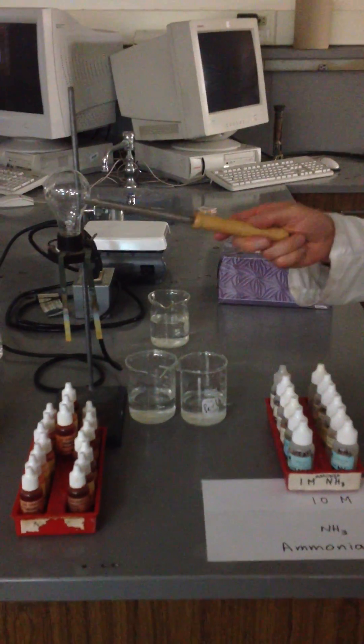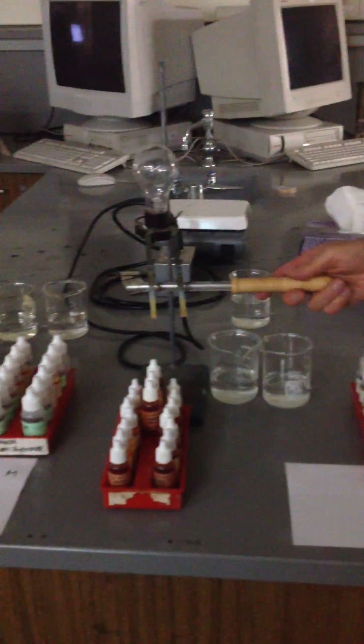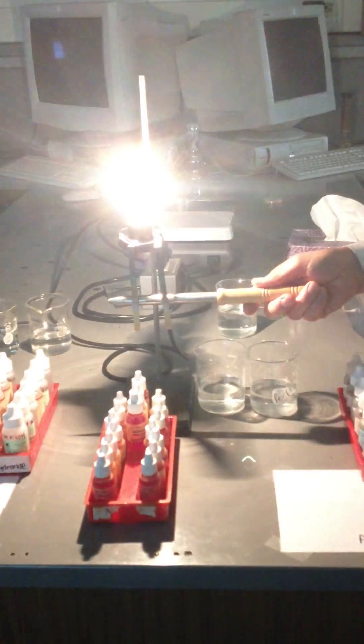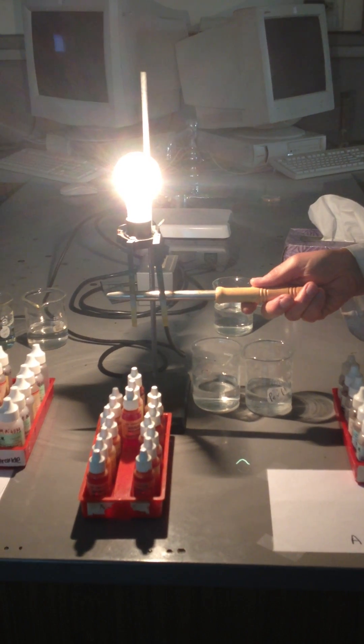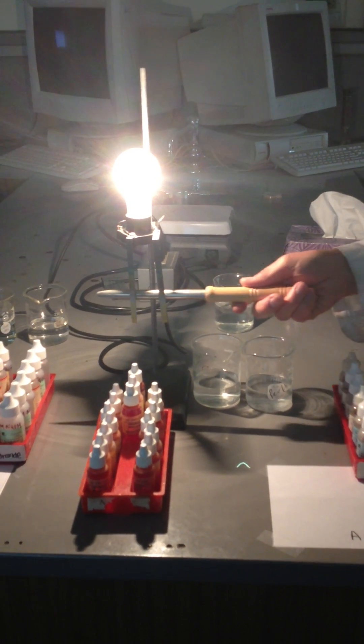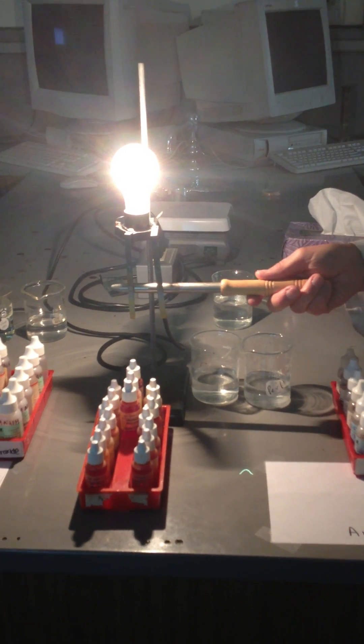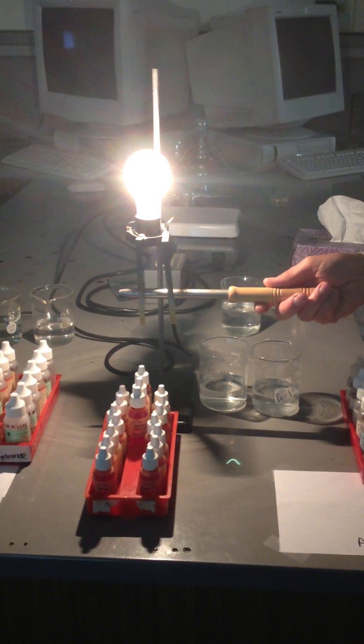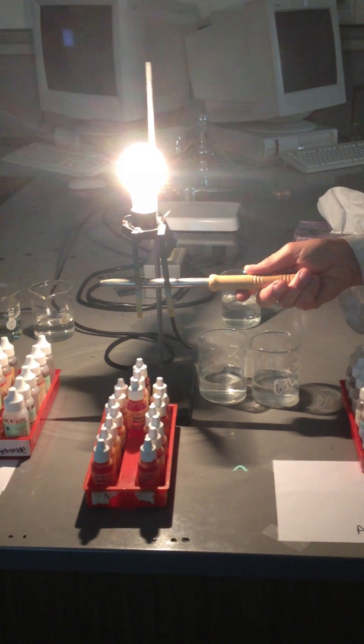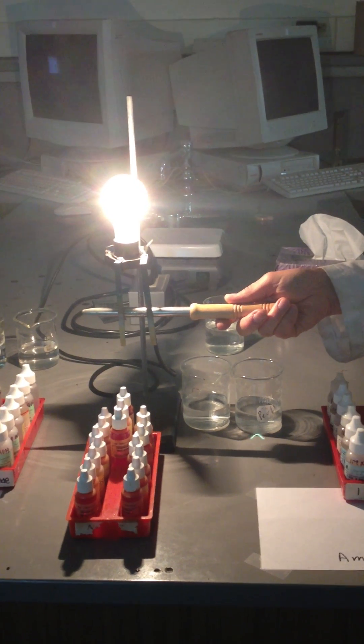What you're looking at is a conductivity tester, which is just a light bulb and some electrodes down below. When I touch the electrodes with this spatula, which is made of metal, I'm just completing a connection for the electrical circuit. And as I do that, the light is lighting up, and the brightness of this light is the brightest you're going to see.